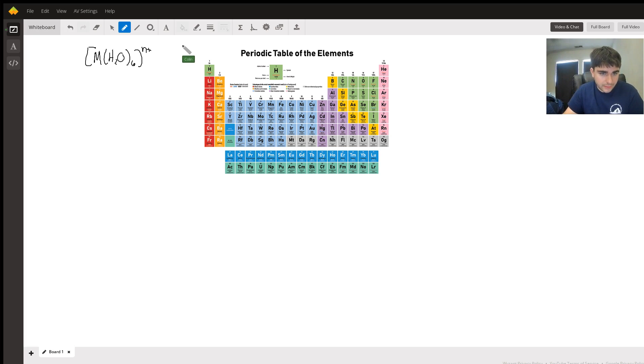You have iron 3, manganese 3, cobalt 2, iron 2, and ruthenium 3. Here's what you need to ask yourself. What type of transition metal is this?